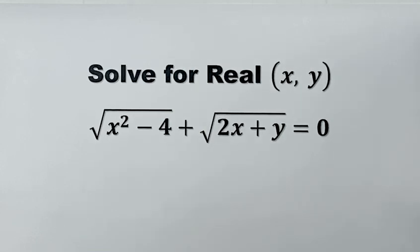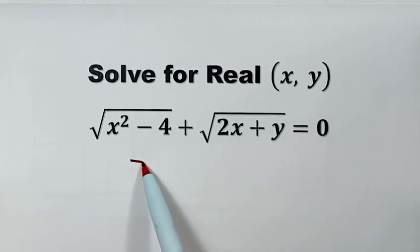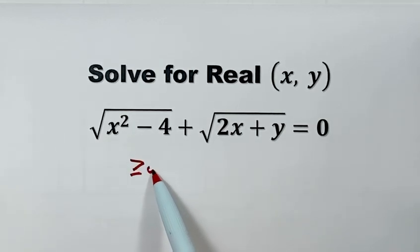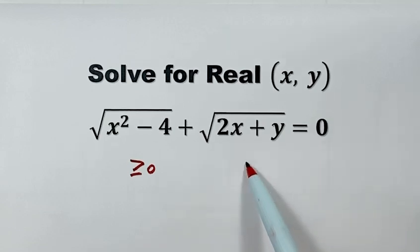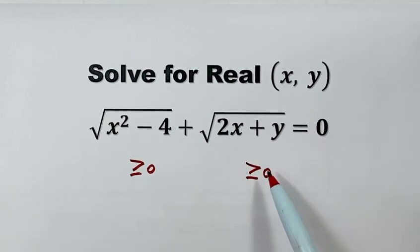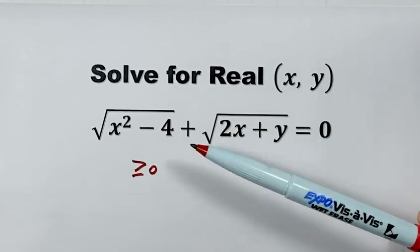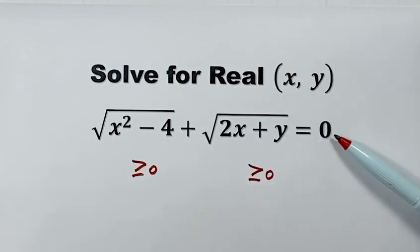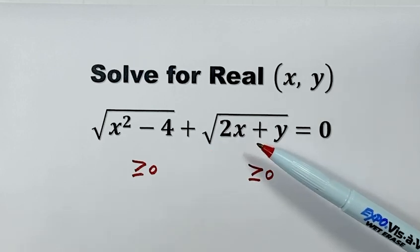We need to remember the property of square roots. For any square root, it must be greater than or equal to 0. So the first square root must be ≥ 0, and the second square root must also be ≥ 0. But here we have the sum of the two square roots equal to 0, so that means each square root must equal 0.